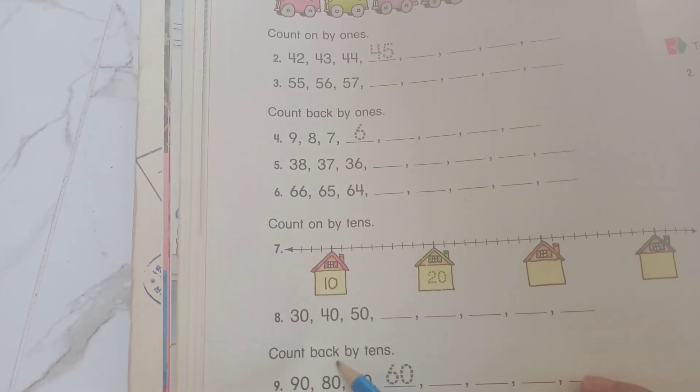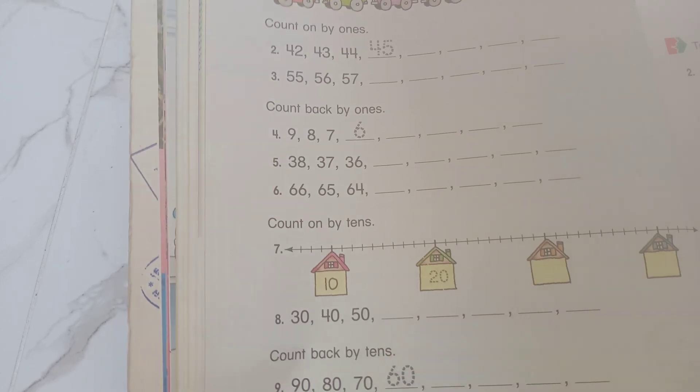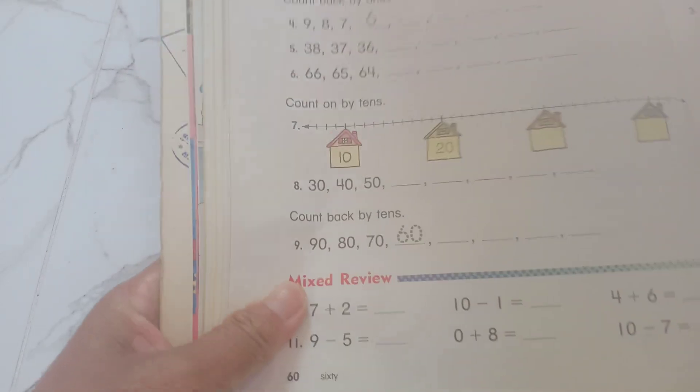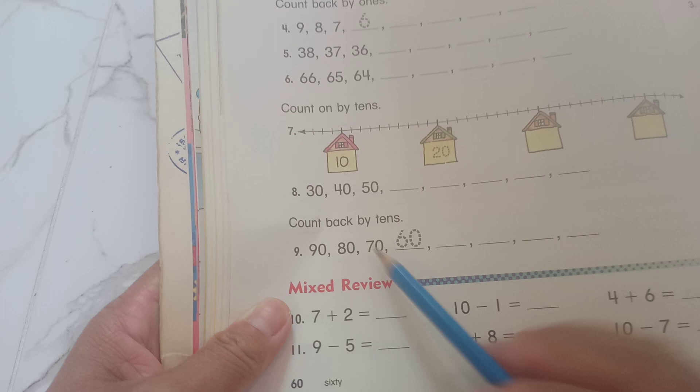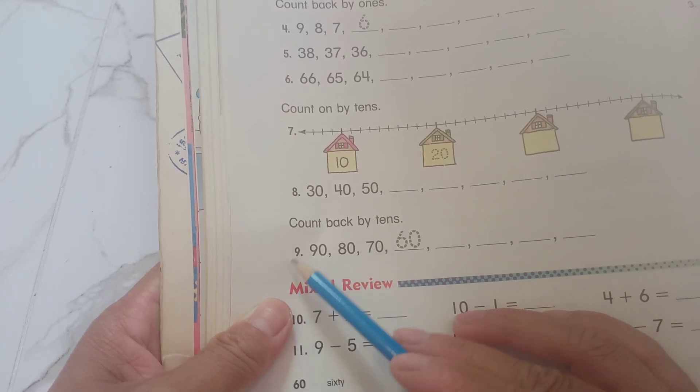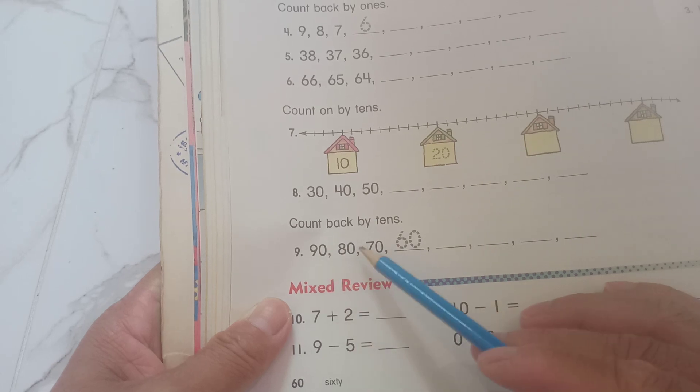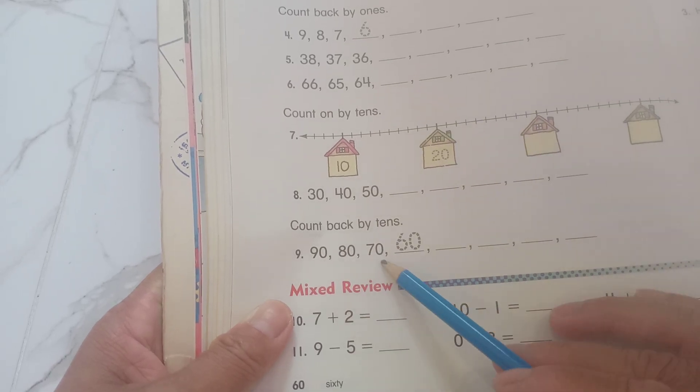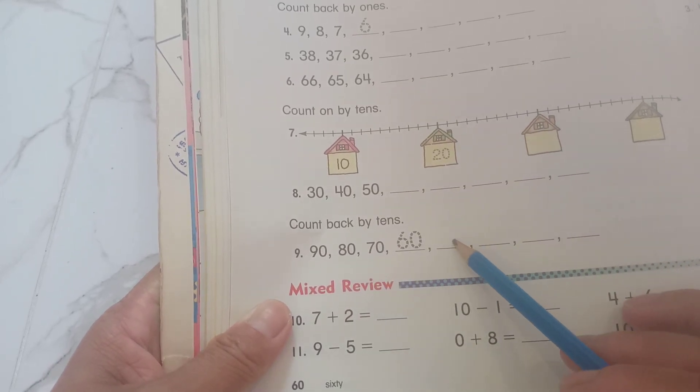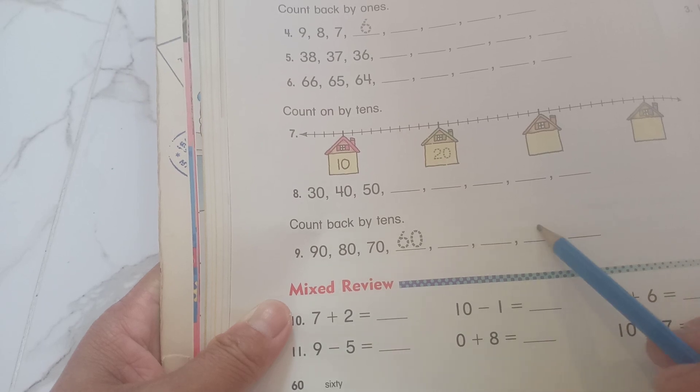And count back by 10. Exercise number 9: 90, 80, 70, 60, 50, 40, 30, 20, 10.